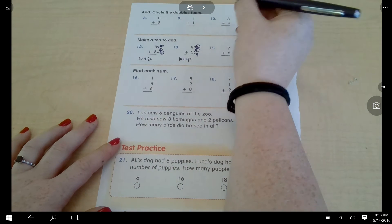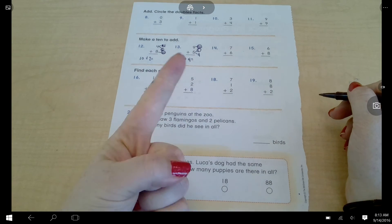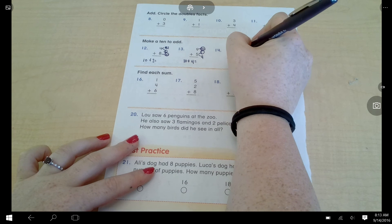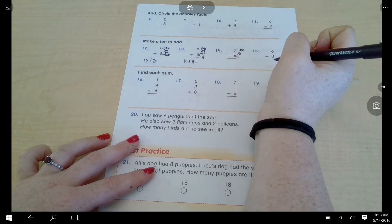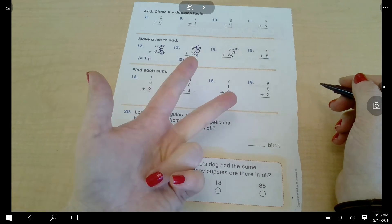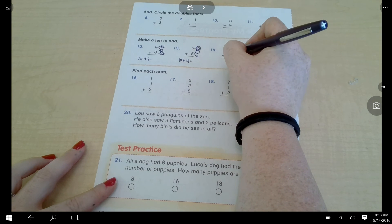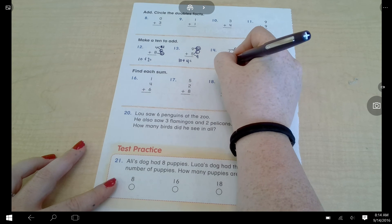All right, the bigger number is the seven, so I need to figure out how many more I need to make ten. Seven, eight, nine, ten. I need three. Three, four, five, six. So now I'm going to do ten plus three.